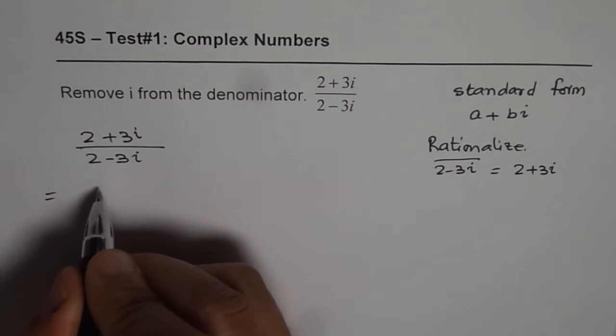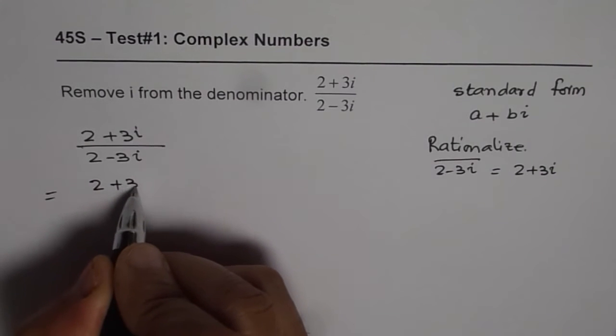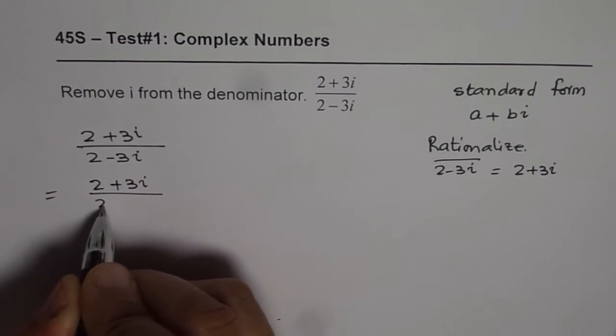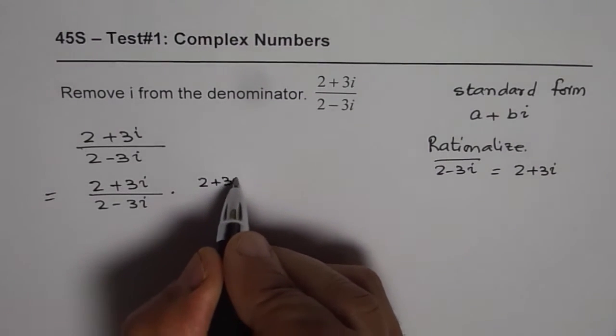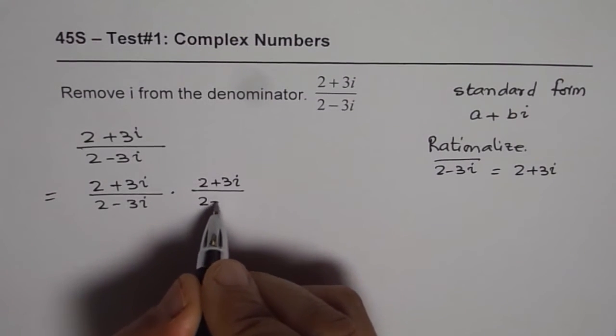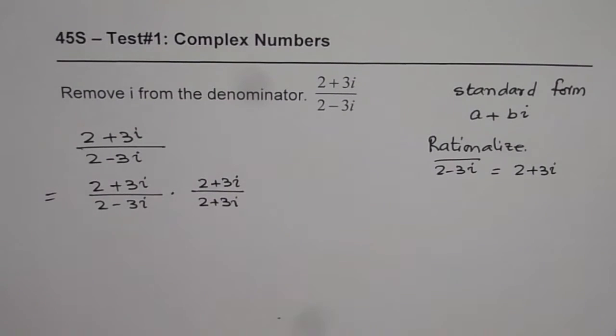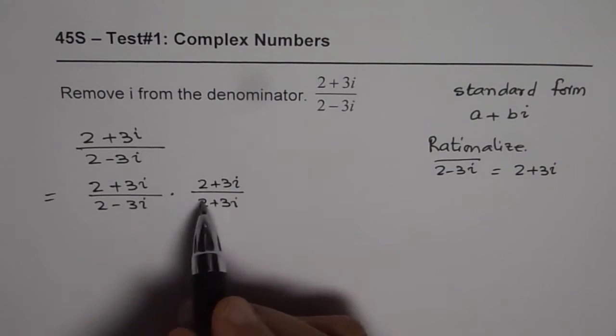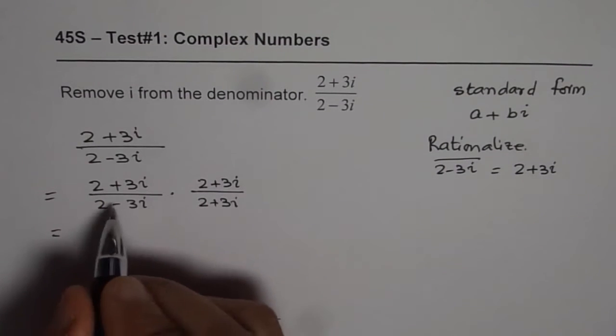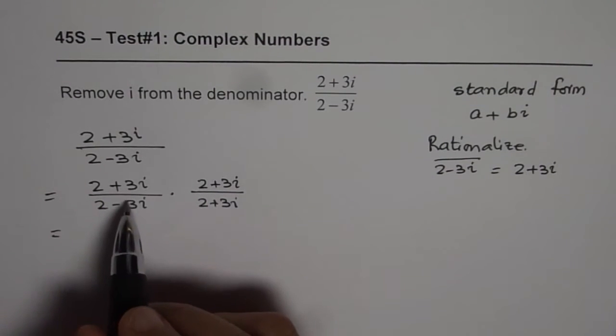So we can write this expression as 2 plus 3i over 2 minus 3i times 2 plus 3i divided by 2 plus 3i. We are multiplying and dividing by the same number, which is like 1. So our expression is exactly the same.